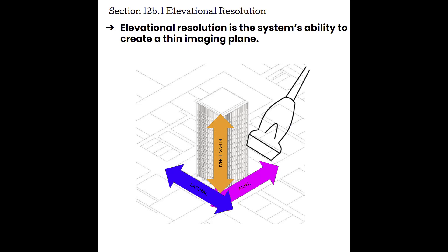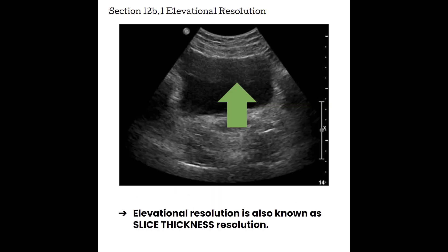For ultrasound, a beam with one floor is much more preferred than a beam with 50 floors. In general, elevation is the z-axis. The thickness of the beam is going to improve or degrade image quality. When the beam is thin, the reflectors displayed are the most accurate representation of anatomy. When the beam is thick, the reflectors displayed not only represent reflectors in the center of the beam, but we're also going to see some reflectors from different heights of the beam.